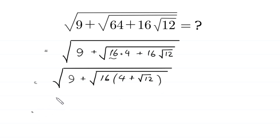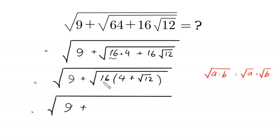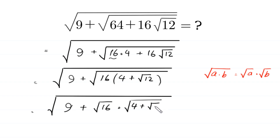Next, square root of 9 plus — by using the property that square root of A times B is equal to square root of A times square root of B — this square root of 16 times (4 plus square root of 12) will become square root of 16 times square root of (4 plus square root of 12).